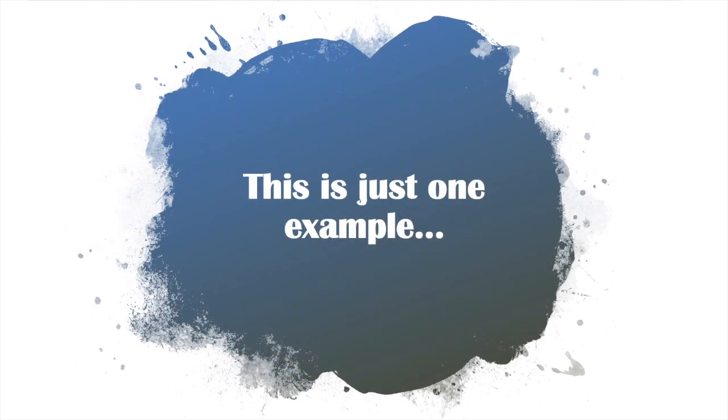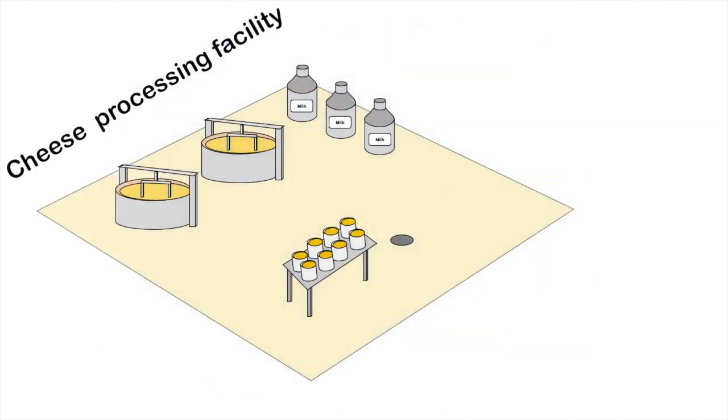This is just one example of how whole genome sequencing can be used to track foodborne pathogens in the food supply chain. We can also use this method to routinely check for the presence of pathogens and identify strains that are persisting in food processing facilities.